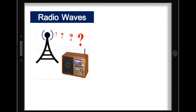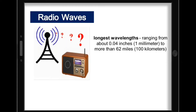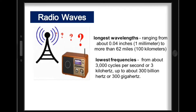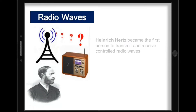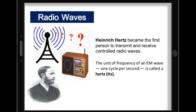Radio waves have the longest wavelength in the EM spectrum, ranging from about 0.04 inches or 1 millimeter to more than 62 miles or 100 kilometers. They also have the lowest frequencies, from about 3 kilohertz up to about 300 gigahertz. In 1886, Heinrich Hertz, a German physicist, applied Maxwell's theories in an experiment and became the first person to transmit and receive controlled radio waves. That's why the unit of frequency, one cycle per second, is called a hertz in his honor.